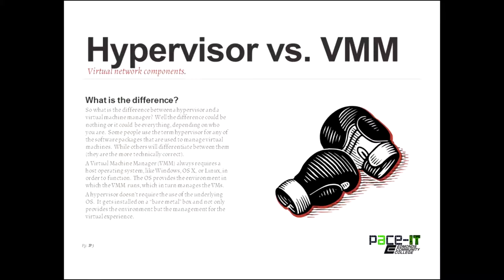The more technically correct distinction is this: a virtual machine manager always requires a host operating system like Windows 8, Windows Server, OS X, or Linux in order to function. The operating system provides the environment in which the VMM runs, and the VMM is what actually manages the virtual machine. A hypervisor, on the other hand, doesn't require an underlying operating system.